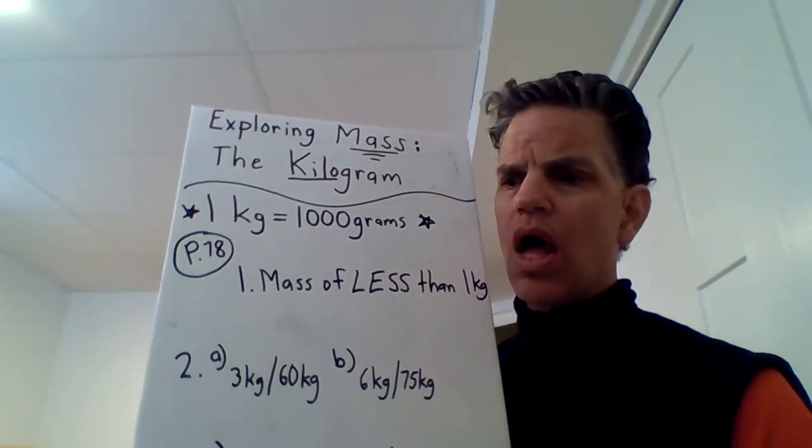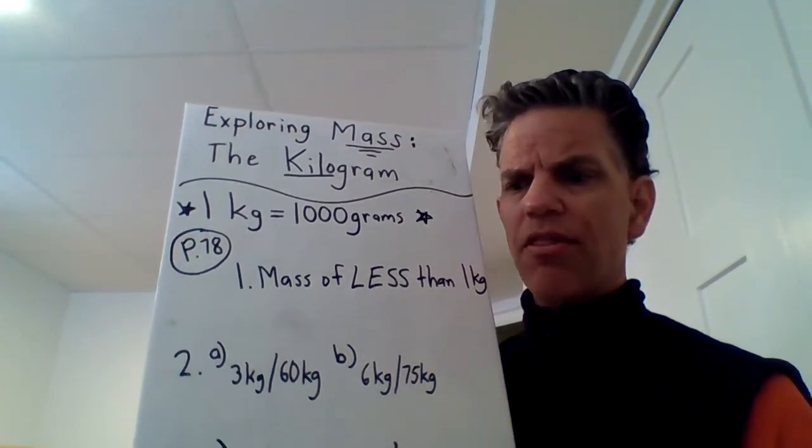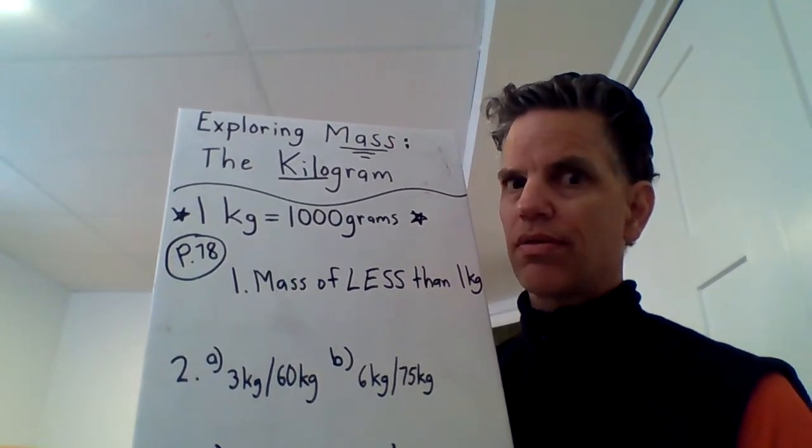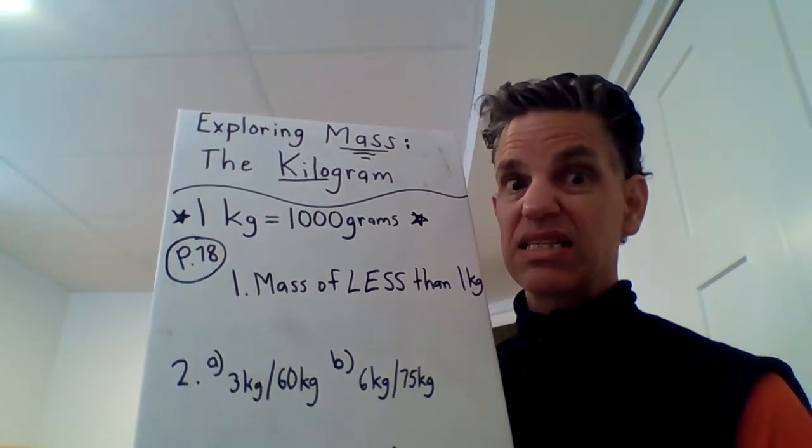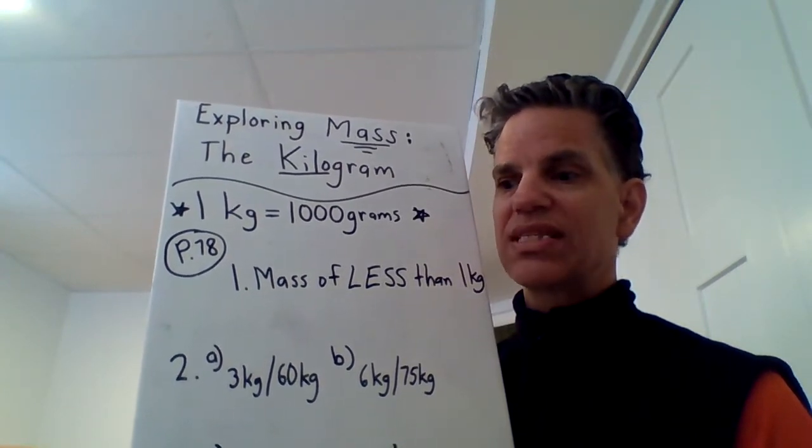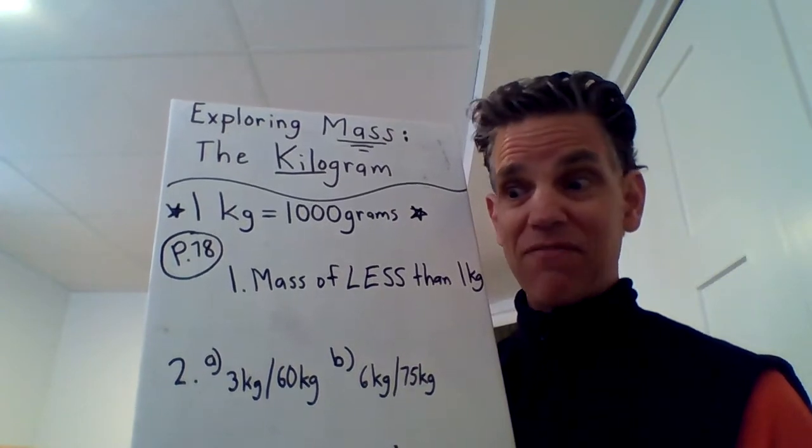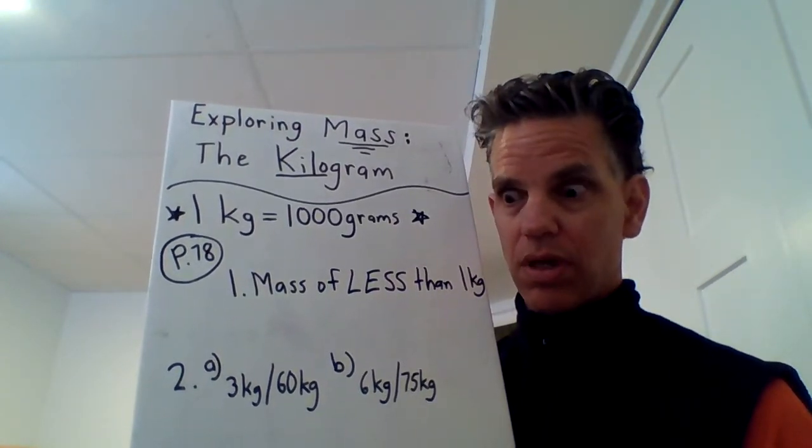Number two. Circle the better estimate. So you have to kind of estimate here. Three kilograms or sixty kilograms for a bag of rice. Three sounds way more realistic. Sixty is like a teenager. Six kilograms or seventy-five kilograms for a chicken. Seventy-five kilograms? I don't think a chicken is going to be that big. I'm pretty sure that one's six.